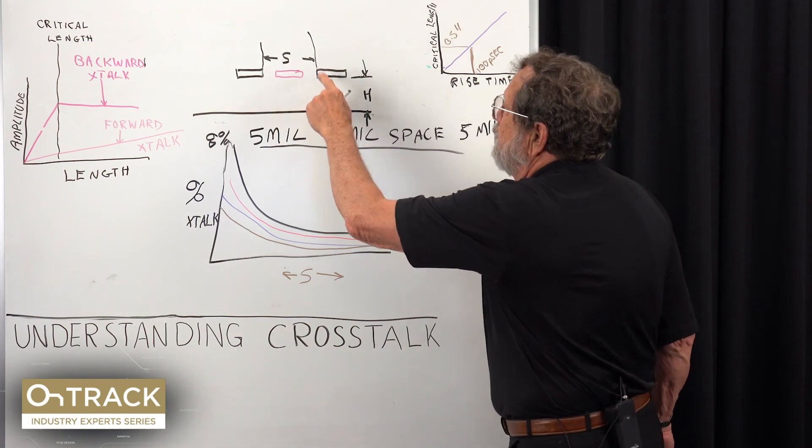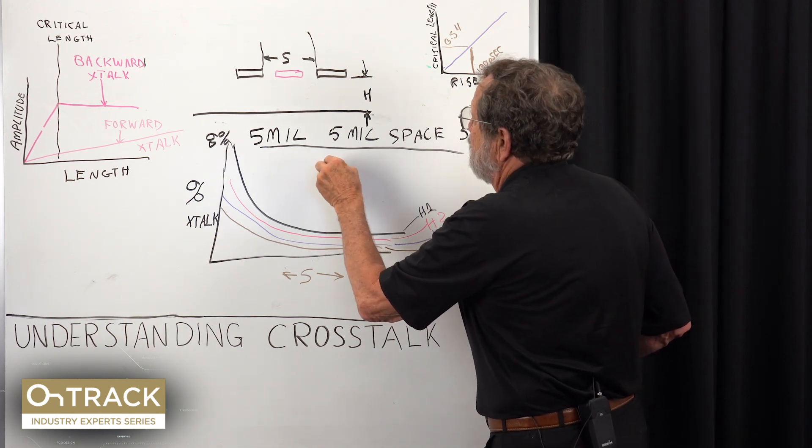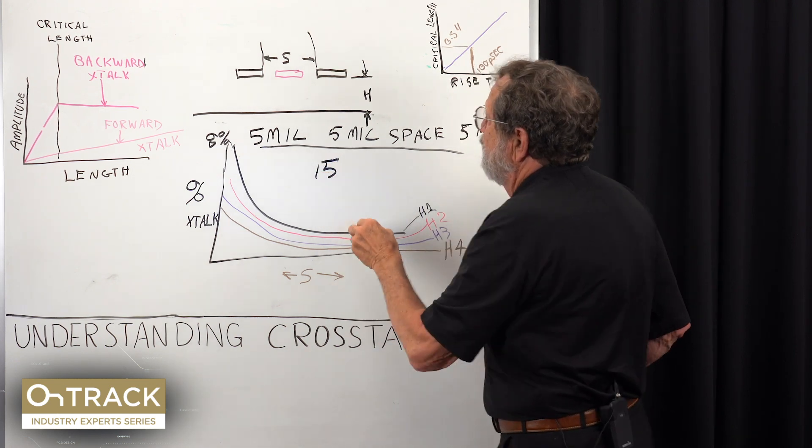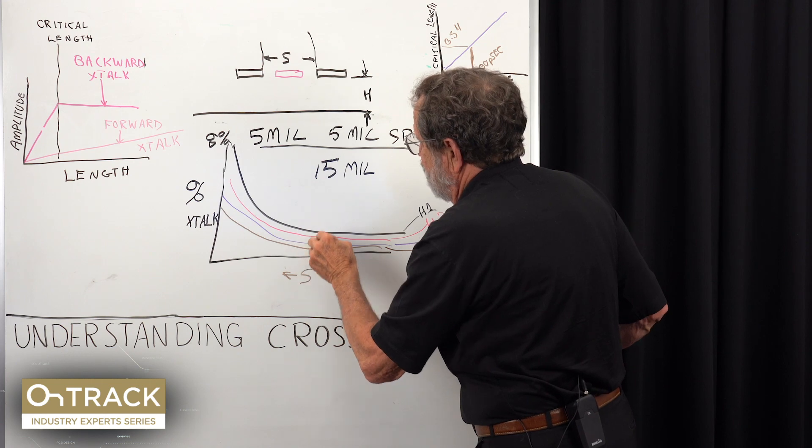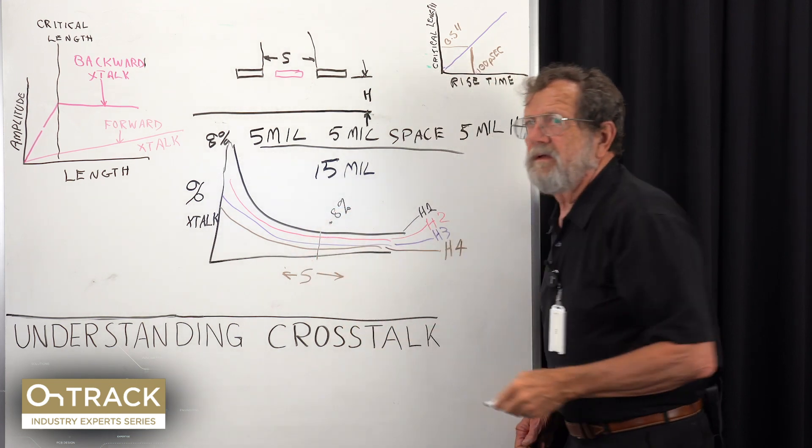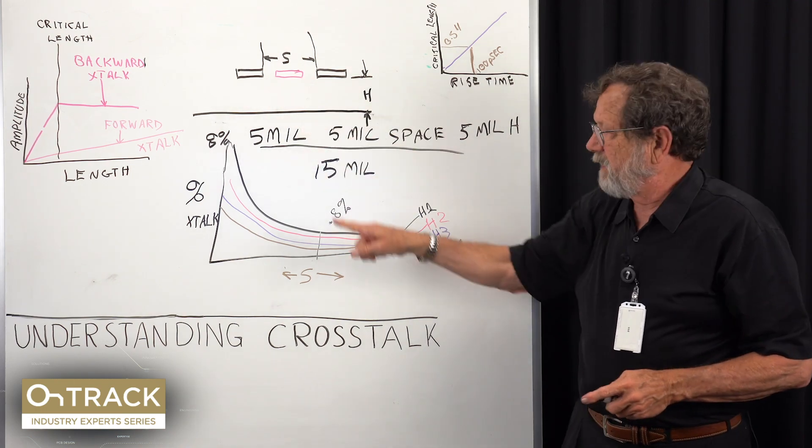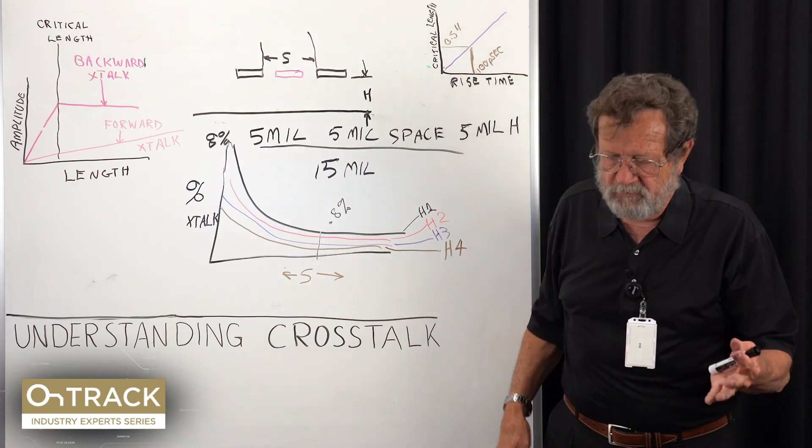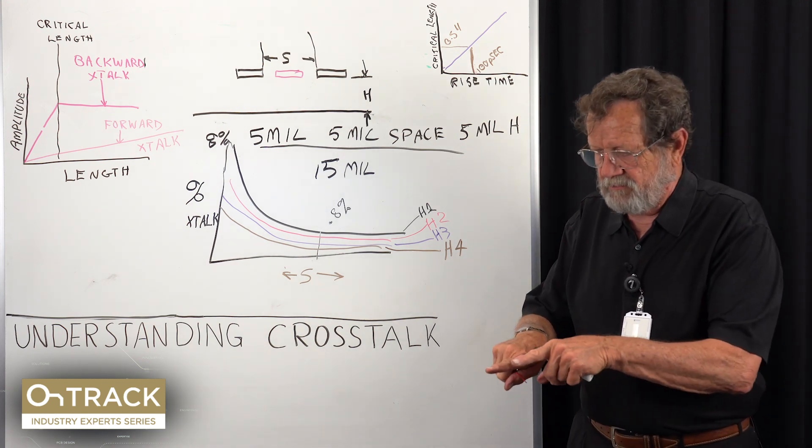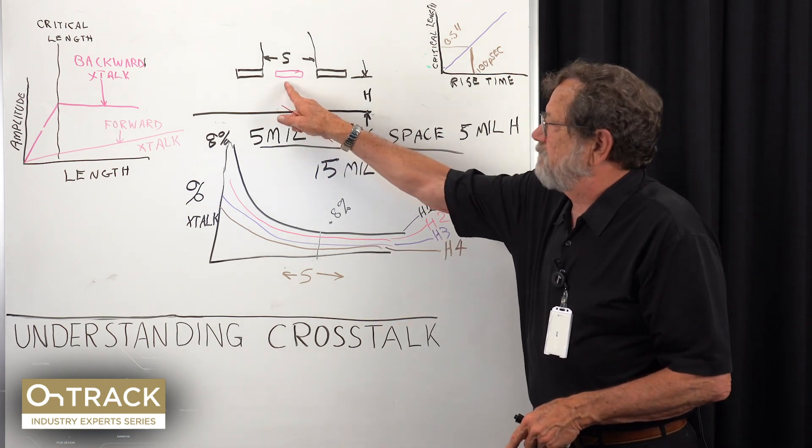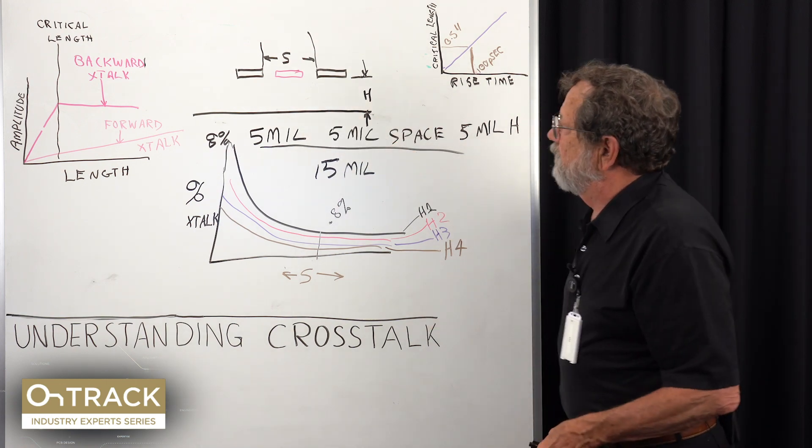If you didn't like that, you'd say I'll put a guard trace in. What does it take? I have to separate these two by a 5 mil trace and a 5 mil space, so now S is not 5 mils, it's 15 mils. We go from 8% to about 0.8%. Sure enough, the crosstalk went down, but it wasn't the guard trace that did it—it was the mechanical separation that did it.